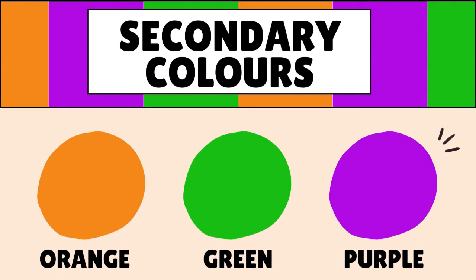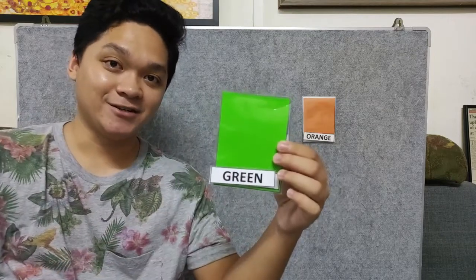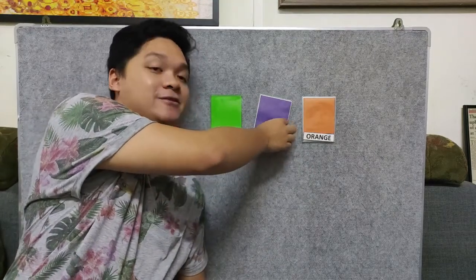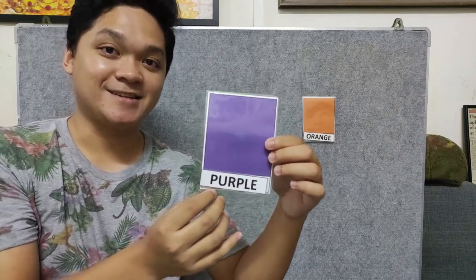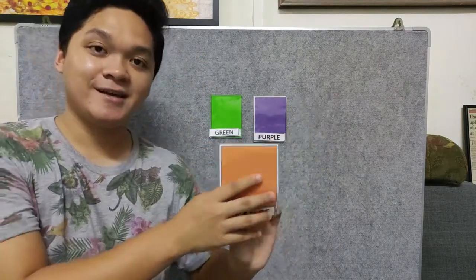Now we're going to do some matching. We're going to do matching with our visuals right here. Before we start, let's review the different secondary colors first. We have the color green, the color purple, and the color orange.